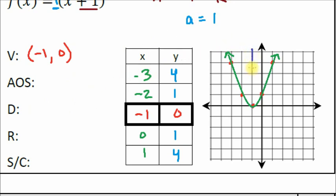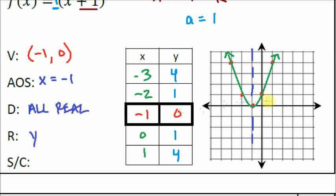Axis of symmetry is the vertical line through the vertex: x equals negative one. Domain is all real numbers. Range: the y-value of the vertex is zero and the parabola faces up, so y is greater than or equal to zero. Our a value equals one — not stretched or compressed.